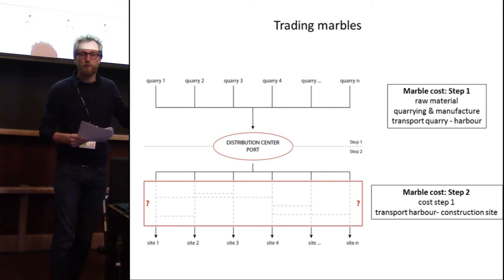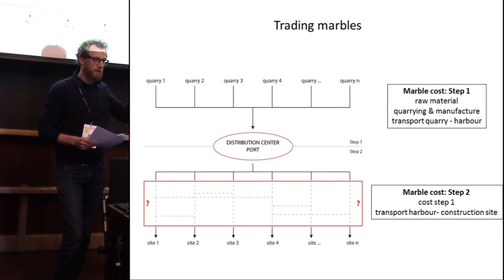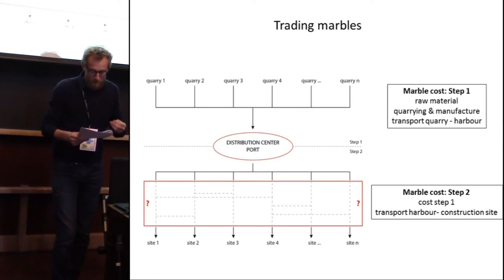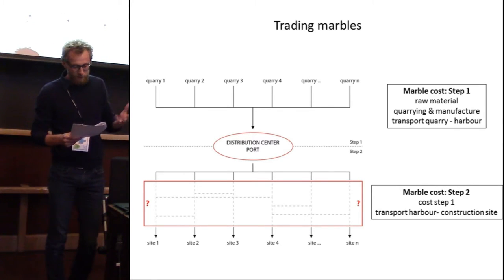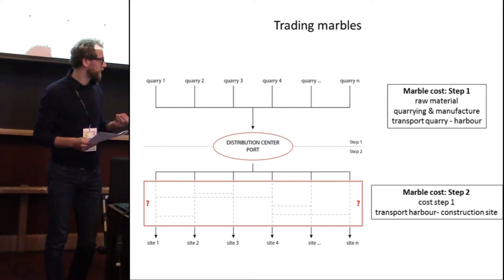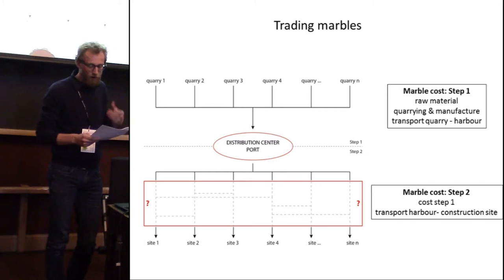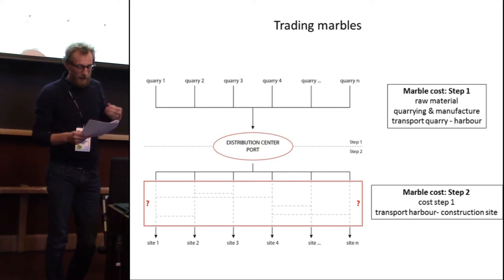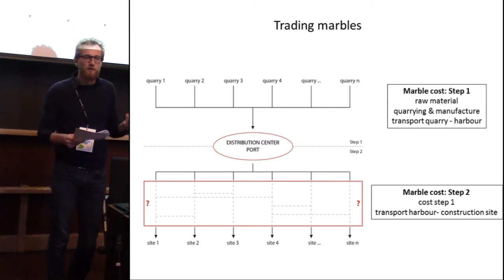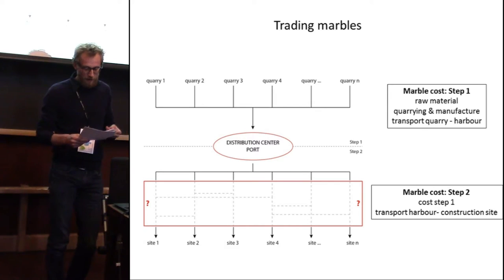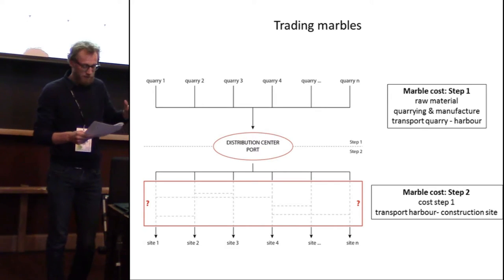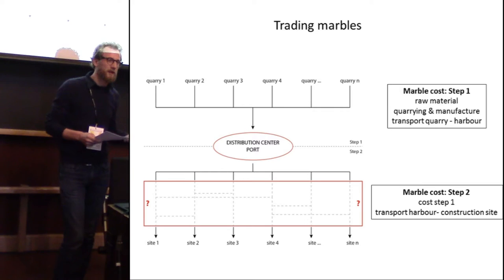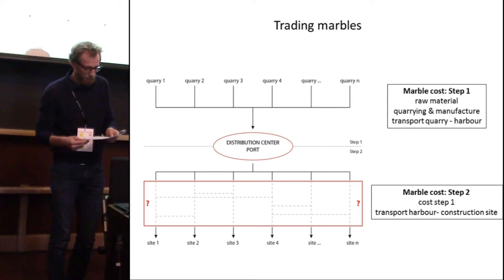For the comparison between transport and assemblages, there are two basic assumptions to address. First, assemblages with similar compositions are likely to result from similar processes of deposition. Second, sites located in more central positions in the transport network are more easily accessible for marble traders, while sites located more peripherally in the transport network are less accessible.